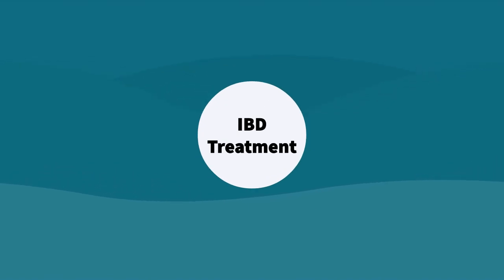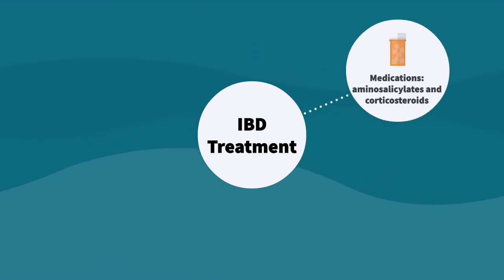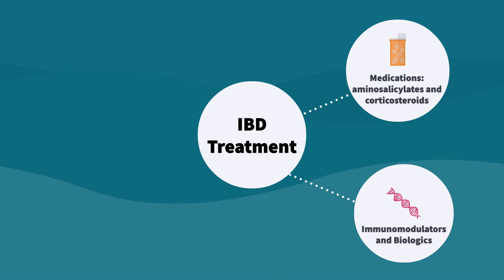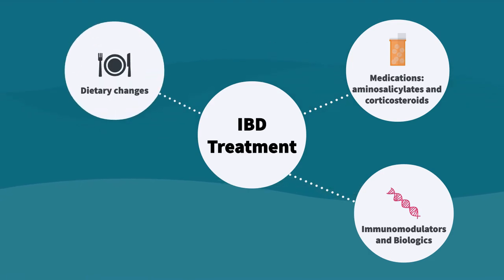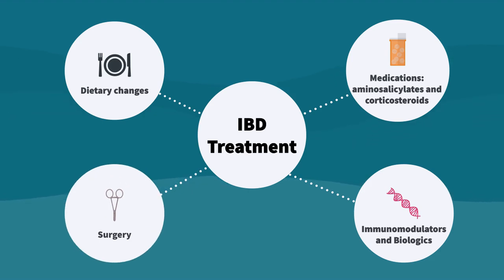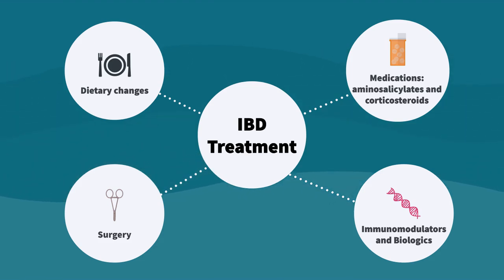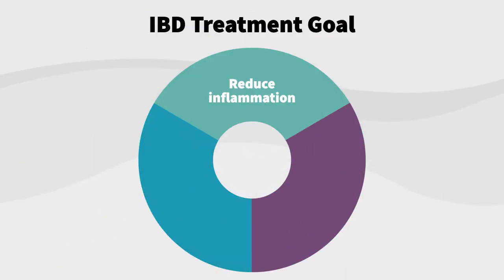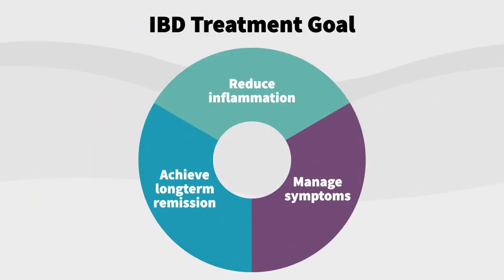Treatment for both ulcerative colitis and Crohn's disease is multifaceted. Medications such as aminosalicylates and corticosteroids are often used to reduce inflammation. Immunomodulators and biologics can help manage immune system activity. Dietary modifications tailored to individual patient needs can alleviate symptoms and improve quality of life. In more severe cases, surgical intervention may be necessary, such as resection of affected bowel segments in Crohn's disease or colectomy in ulcerative colitis. The goal is to reduce inflammation, manage symptoms, and achieve long-term remission.